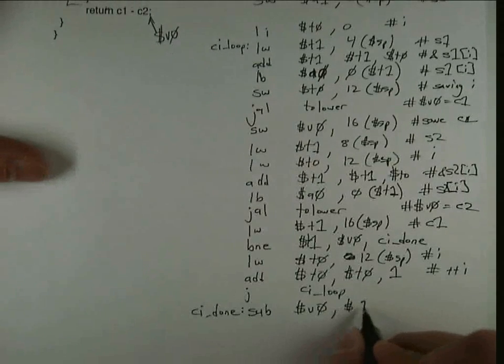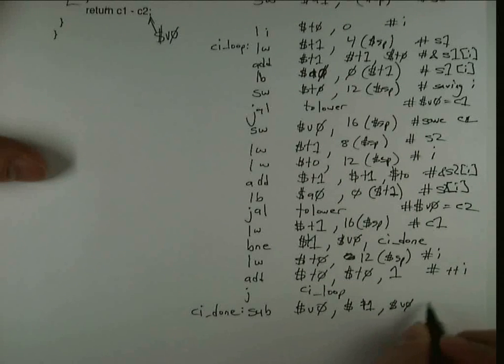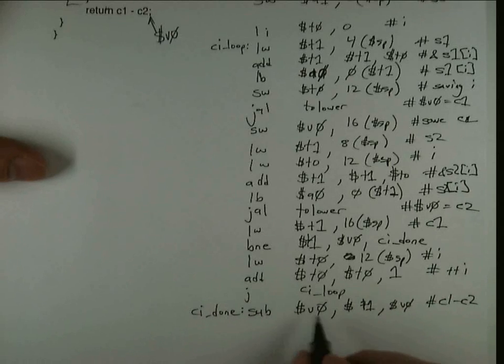by taking C1, which is in T1, and subtracting V0 from it. So that will give me C1 minus C2. So I'm almost done, except I have to fix up the stack.